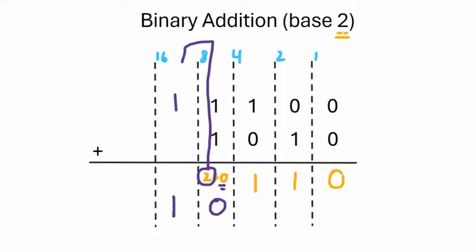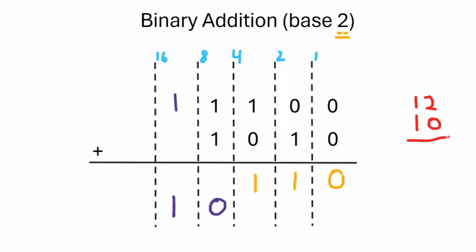Now let's figure out if this is the correct answer. Here you can see I have an 8 and a 4 — well, 8 plus 4 is 12. And then you have 8 and 2, which is 10. And we can easily see it as 22. Now our answer is 16 plus 4, that's 20, plus 2 is 22. And does that equal that? Yes. That's the first problem all done.